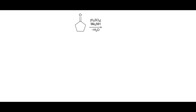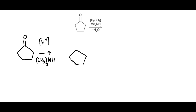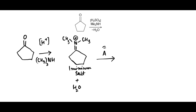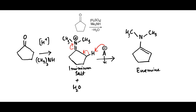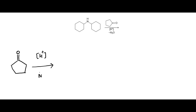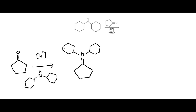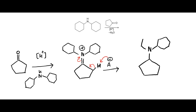Consider this reaction: the acid-catalyzed treatment of cyclopentanone with dimethylamine will first form iminium salt with elimination of water. The iminium salt is then deprotonated by base at alpha carbon to form an enamine. The deprotonation can be achieved by bisulfate ion or amine. Similarly, cyclopentanone on acid-catalyzed treatment with dicyclohexylamine forms iminium salt, which is then deprotonated at alpha carbon to form an enamine.